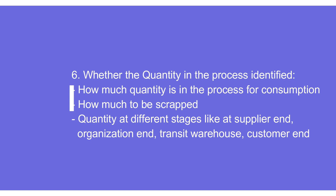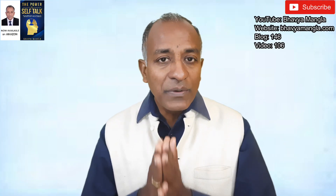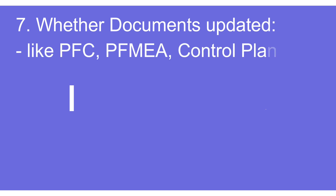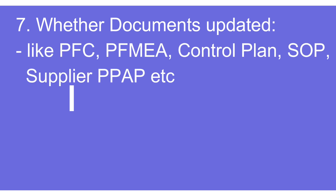Step number seven is about whether we are updating our documents. In a typical organization there is a process flowchart, process FMEA, control plan, standard operating procedures, supplier PPAP, and all those documents need to be reviewed and updated wherever action is required. In many cases, organizations only update the SOP used by the operator, while other documents like process flowchart, FMEA, and control plan are never reviewed and updated.